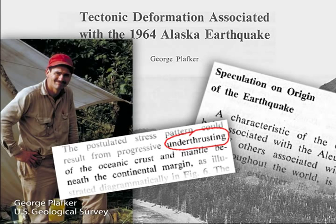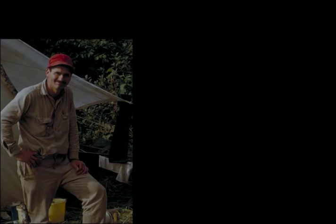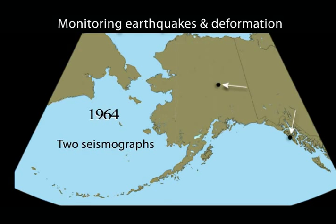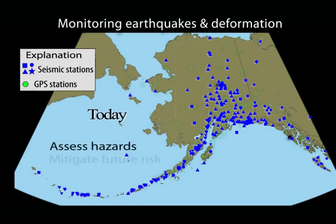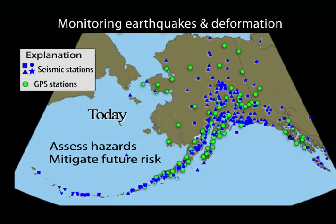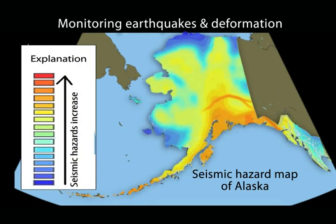Since 1964, when there were only two seismometers in Alaska, monitoring earthquakes and ground deformation to assess hazards and mitigate future risk has greatly increased. Research that characterizes earthquakes and fault lines serves to reduce the possibility of casualties by better land use planning and constructing earthquake-resistant buildings, allowing us to live more safely in earthquake zones.